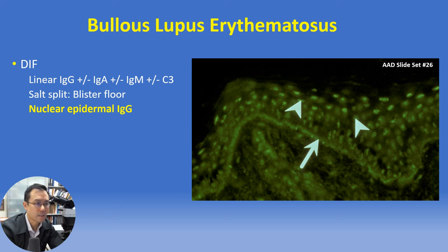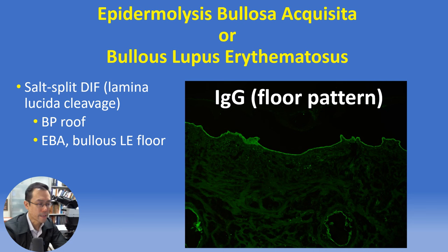Finally, the salt-split DIF technique involves placing the specimen in one molar sodium chloride for many hours to induce a split at the lamina lucida, such that sub-lamina densa targets — characteristic of EBA and bullous lupus — will stain on the floor of the subepidermal salt-induced split, whereas bullous pemphigoid in contrast would stain in the blister roof.